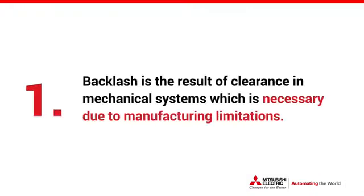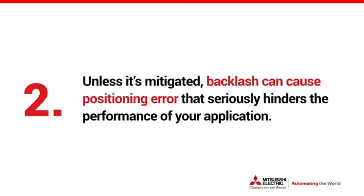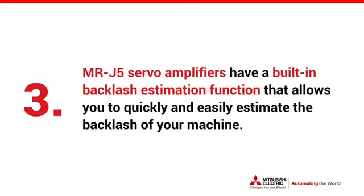To summarize: first, backlash is the result of clearances in a mechanical system, which is necessary due to manufacturing limitations. Second, unless it's mitigated, backlash can cause positioning errors that seriously hinder the performance of your application. And third, our MR-J5 servo amplifiers have a built-in backlash estimation function that allows you to quickly and easily estimate the backlash of your machine. Lastly, thank you for taking the time to watch this video — I hope you found it helpful.